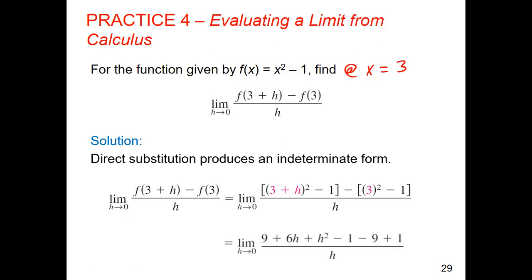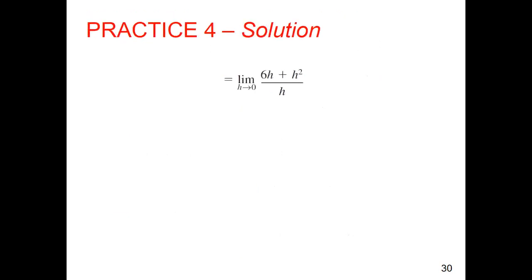I'm going to combine like terms and eliminate wherever I can. What can be eliminated here? The nines and the ones. Because I have a positive nine and negative nine, a negative one and a positive one. Once I eliminate those, I'm left with six h plus h squared divided by h.